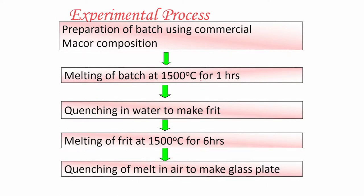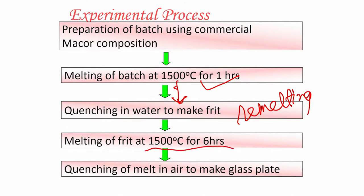This is the typical manufacturing protocol: mix the batch, melt at 1500°C for 1 hour in a platinum crucible, then quench into water to make frit. For multi-component glass materials, a single melting is not sufficient — remelting is required. Remelting means taking the frit again and melting at 1500°C for 6 hours; the longer holding time ensures homogeneous compositional mixing in the melt state, yielding a glass plate with uniform composition.